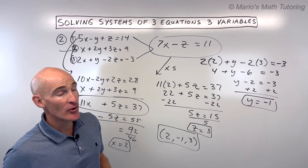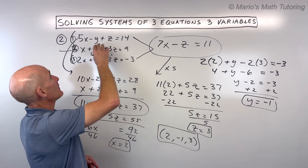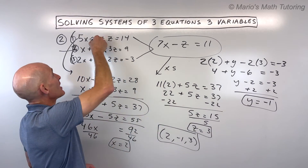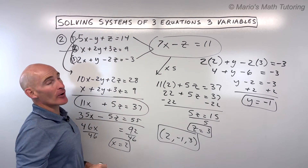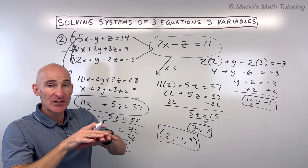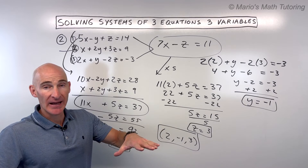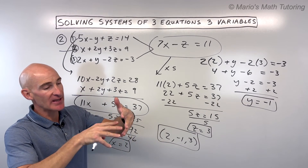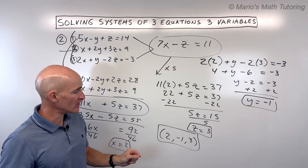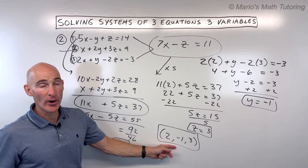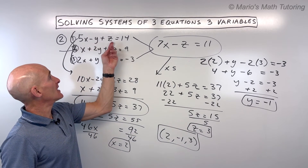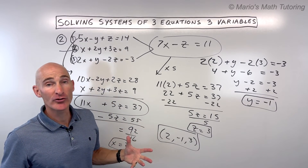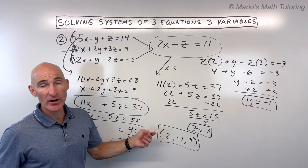Now you're probably saying, what does this really mean? These are called linear equations — you can see how the exponent is to the first power. If you were to graph these, they actually form flat surfaces called planes. What we're doing is figuring out where these three planes intersect — what point do they all cross at. If you put the solution back into each of the equations, you should get 14, 9, and negative 3, which makes them all true. That's the common point of intersection.